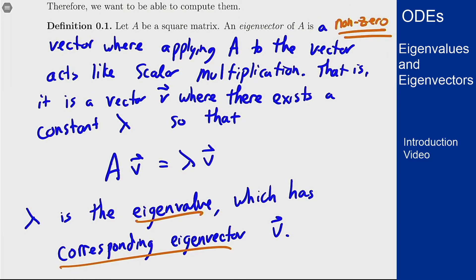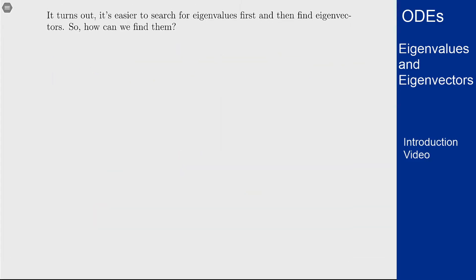We want to find these, and it turns out it's easier to find eigenvalues than to find eigenvectors. What we can do is use the eigenvalues we found to then get the eigenvectors afterwards. How do we do this?